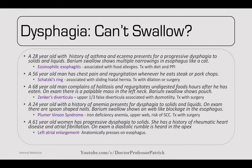Lastly, a 61-year-old woman has progressive dysphagia to solids. She has a history of rheumatic heart disease and atrial fibrillation. On exam there's a diastolic rumble at the apex — classic for mitral regurgitation. In this case, left atrial enlargement is the cause. Anatomically the left atrium is the most posterior and presses against the esophagus when enlarged.